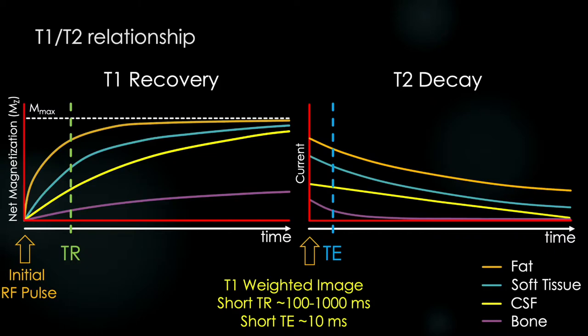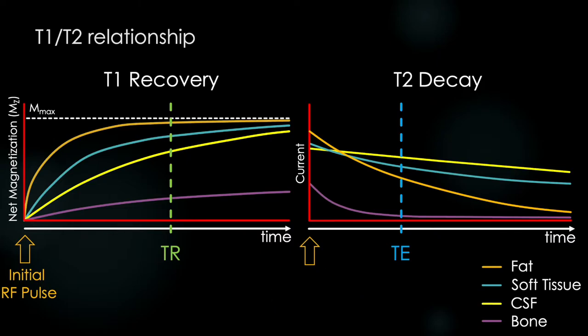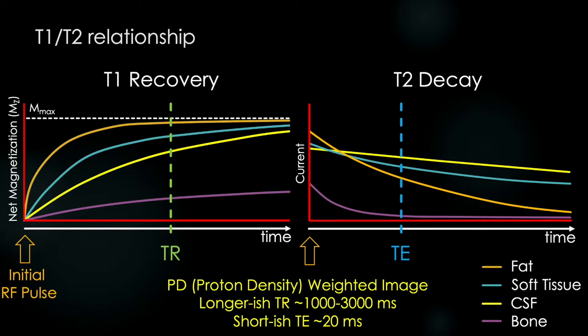We're not limited to just these combinations. What if we choose a longish TR and a short-ish TE? We should get at least more T2 weighting than before, because we increased TE. This is what we call a proton density or PD weighted image, which has a longer-ish TR of 1000 to 3000 ms and a short-ish TE of around 20 ms. A lot of you are probably scratching your heads while the musculoskeletal folks are jumping around with joy. It's called proton density because there's a better correlation on this sequence with the amount of protons a tissue contains and how much signal we see.